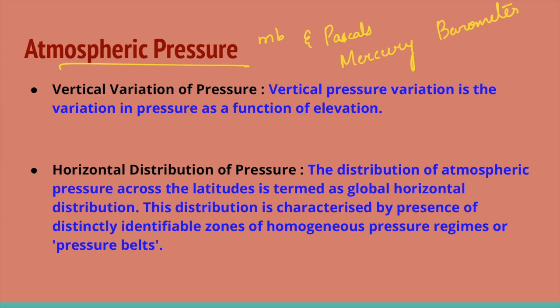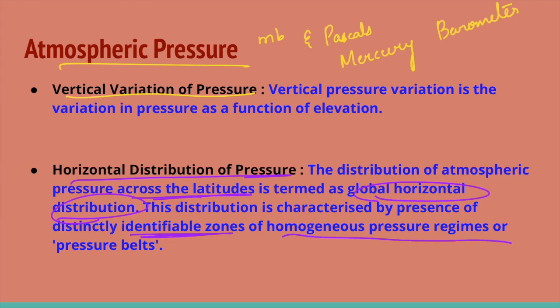Vertical variation of pressure refers to variation in pressure as a function of elevation. Horizontal distribution of pressure refers to the distribution of atmospheric pressure across latitudes, termed global horizontal distribution. This distribution is characterized by distinctly identifiable zones of homogeneous pressure, known as pressure belts.